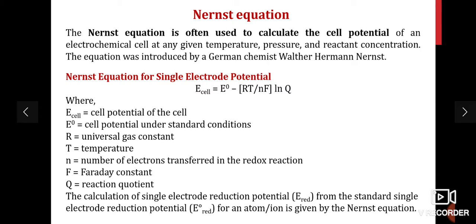What is the Nernst equation? You have already studied this in intermediate. The Nernst equation is used to calculate the electrode potential, that is the cell potential, of an electrochemical cell at any given temperature, pressure, and concentration of the electrolyte. This equation was introduced by German chemist Walther Hermann Nernst. The Nernst equation for single electrode potential is given by: E_cell = E° − (RT/nF) ln Q.